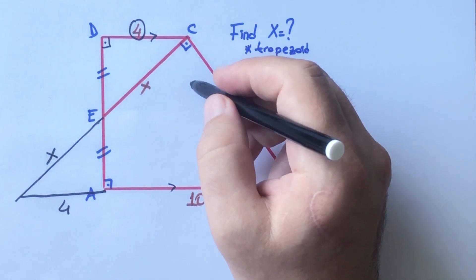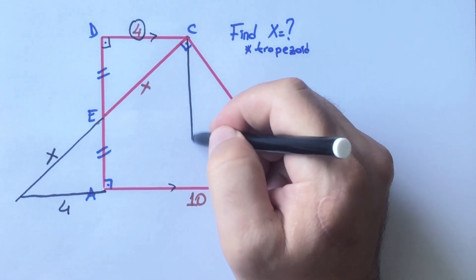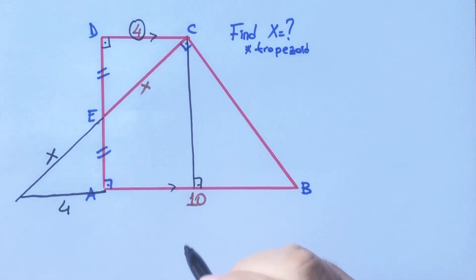Let's draw a perpendicular line onto the base. If here is 4 units, this length must be 4 units, and then 6 units left here.